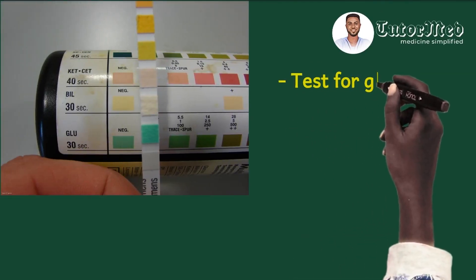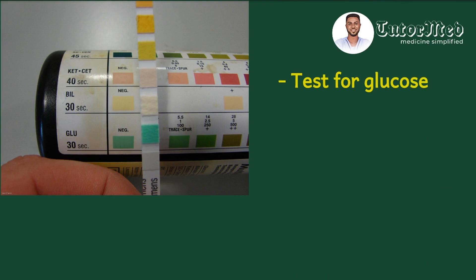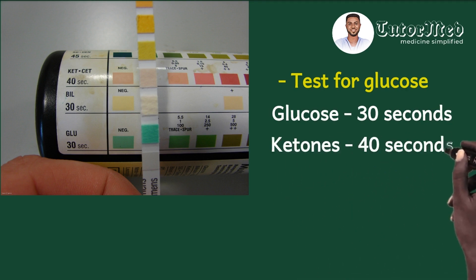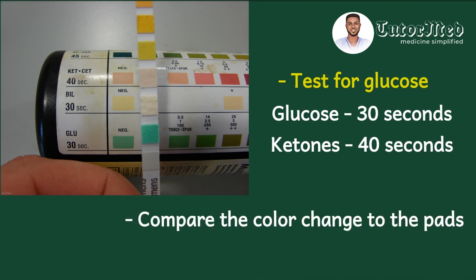To demonstrate: if I want to test a patient's urine for glucose, I dip the urine dipstick into the urine and wait for the time indicated by the manufacturer on the container. For glucose, you wait 30 seconds; for ketones, 40 seconds. After the stipulated time, you compare the color change to the color chart on the container. Here, the color change for glucose is closer to the negative result than the trace result, so the glucose reads as negative.